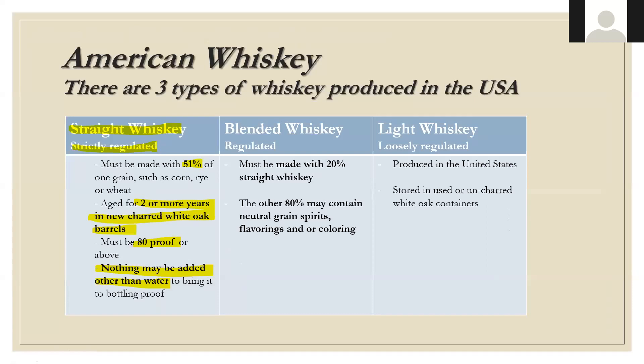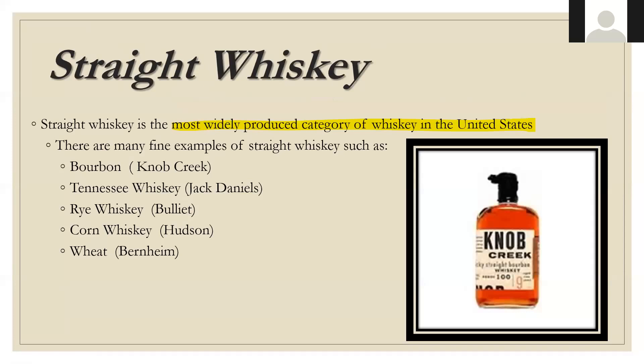Three basic types of whiskey produced in the USA: straight whiskey, which is strictly regulated — it has to be 51% of a single grain, aged two years in new charred white oak barrels, at least 80 proof, and nothing other than water can be used to bring it to bottling proof. Blended whiskey is more loosely regulated, requiring 20% straight whiskey, with the other 80% potentially containing neutral grain spirits, flavorings, and colorings. Light whiskey is the most loosely regulated — just produced in the US and stored in used or uncharred white oak containers.